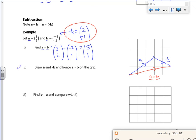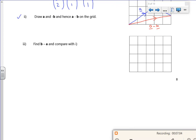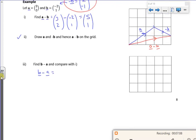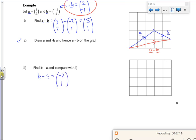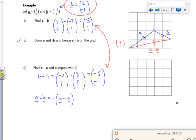So b minus a. So b minus a will be minus 2, 1, minus 3, 2, which is minus 2 minus 3 is minus 5. 1 minus 2 is minus 1. If you look, there is a link, isn't it? It's a minus lots of a. So a minus b. So a minus b is the same as minus b minus a there.